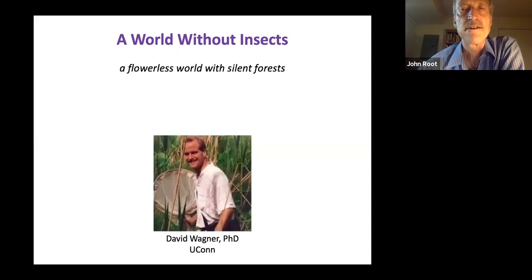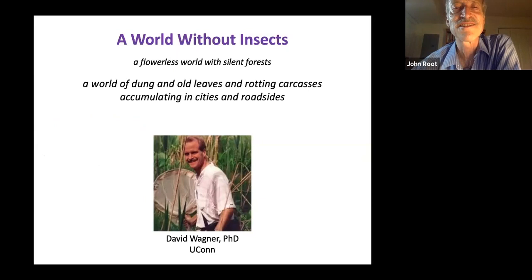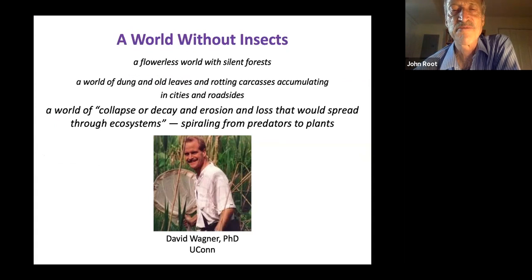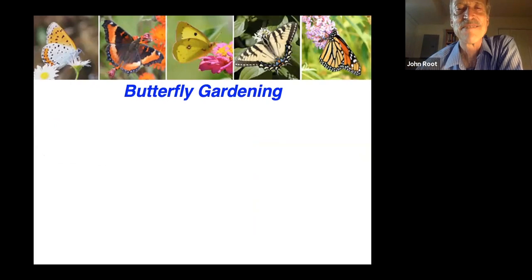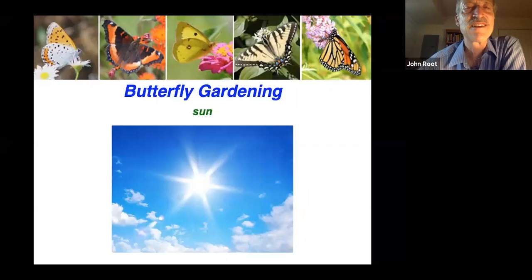An insect apocalypse is upon us if these alarming declines in population continue. A world without insects is not a world we can live in — a flowerless world with silent forests, no birds left, a world of dung and old leaves and rotting carcasses, a world of collapse and decay. Butterflies are undoubtedly the most appealing pollinators out there, which is why butterfly gardening is so popular. And if you're providing the right conditions for butterflies, you'll also be providing conditions that are good for other pollinators as well.